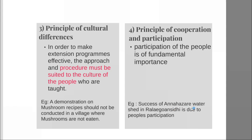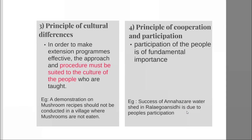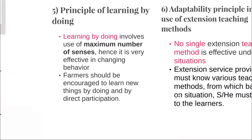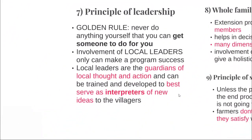Extension work must allow the participation and cooperation from the local people. Anna Hazare's Rally Gram Siddhi is the best example for people's participation and cooperation. Learning by doing involves the maximum number of senses; hence, allow the farmers to learn things by doing them. Various methods of teaching need to be used while teaching farmers, based on the situation and learner's background. Extension work must involve local leadership, and with the local people only, our program will be successful.